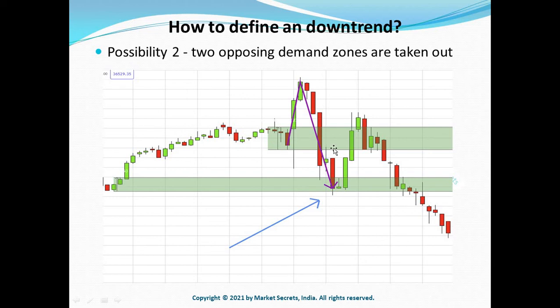Please do not forget the level-on-level situation. In this case we have just one peak, so we cannot draw a bearish downtrend line as price moved down very fast. We need to wait for price to take out two demand zones marked in green. At this particular candle, price has broken below the second demand zone, which tells us the downtrend has officially begun.